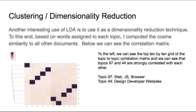For each document I extracted the topics it was assigned to, giving me a document-topic matrix from which I can easily calculate a topic-topic correlation matrix.